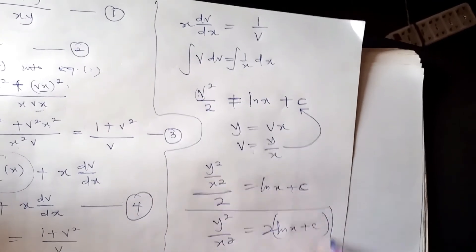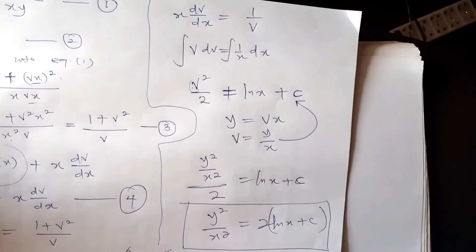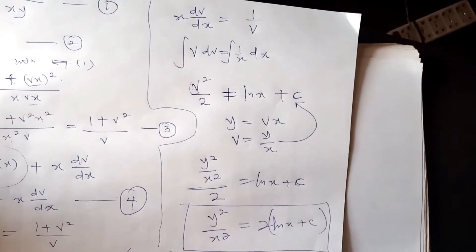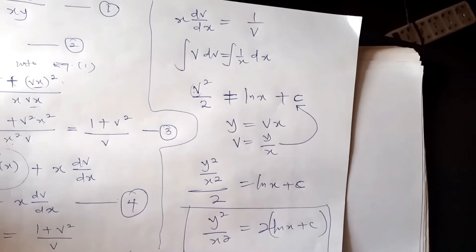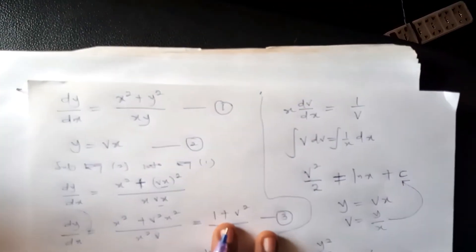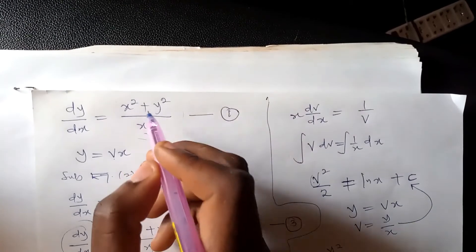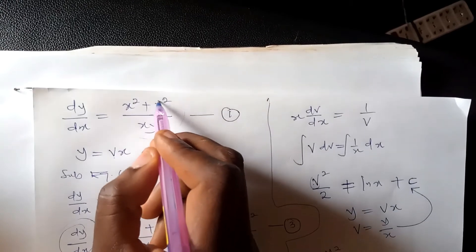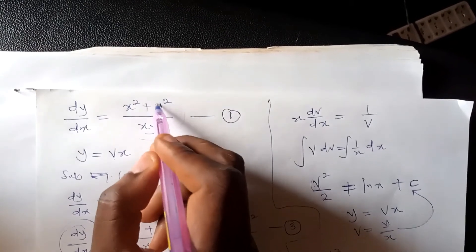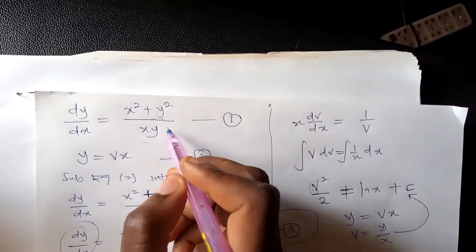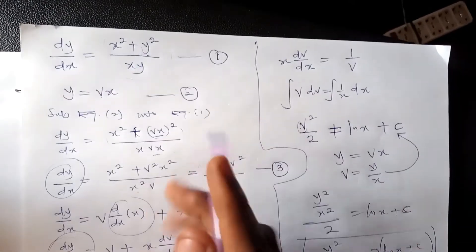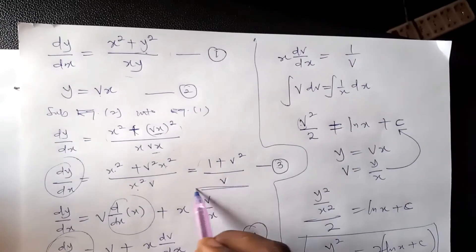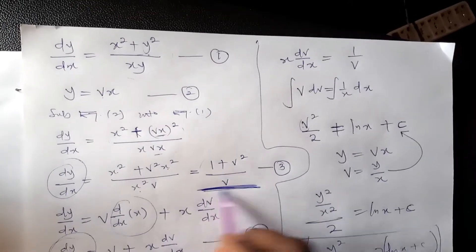This is the solution obtained using the homogeneous method. The key insight is: when you look at f(x, y) and cannot separate variables, replace y with vx and check whether the independent variable x disappears. You substitute, then factorize, and if there is no x remaining in the expression, you can use this method.